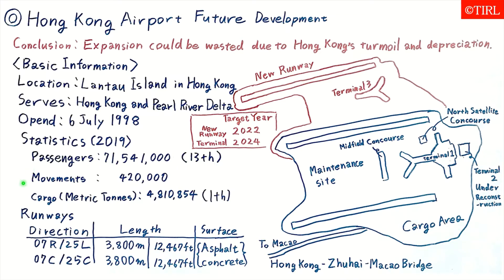The aircraft movement is 420,000. The cargo metric tonnage is 4,810,854, which is number one in the world.